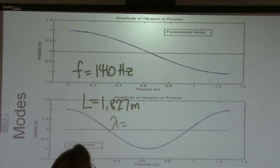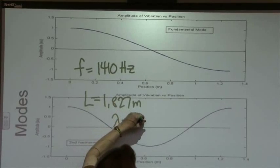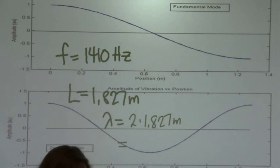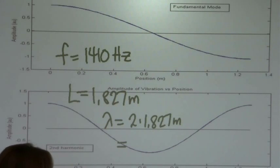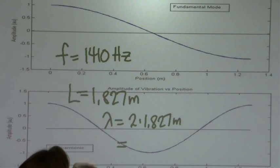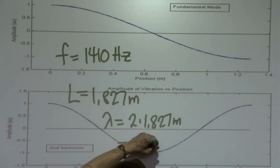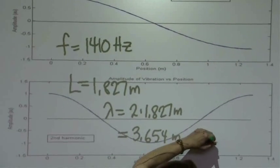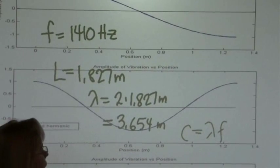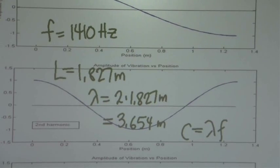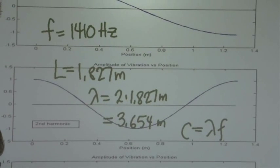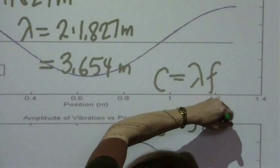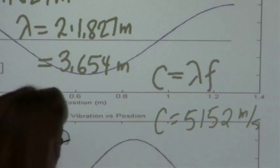That means that the wavelength of that mode right there is twice 1.827 meters. And if I look on my calculator, 1.827 times 2, that's a wavelength of 3.654 meters for that mode. And we know that speed is the wavelength times the frequency. And so I'll multiply those two numbers together, and we get for the speed of these waves 5,152 meters per second.